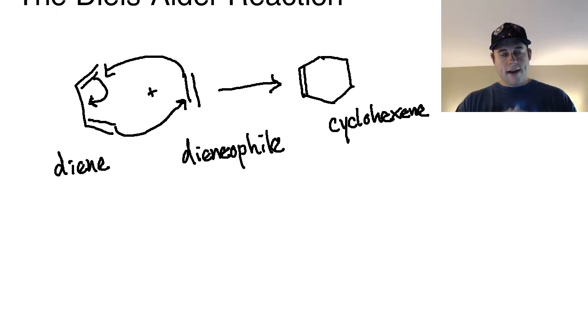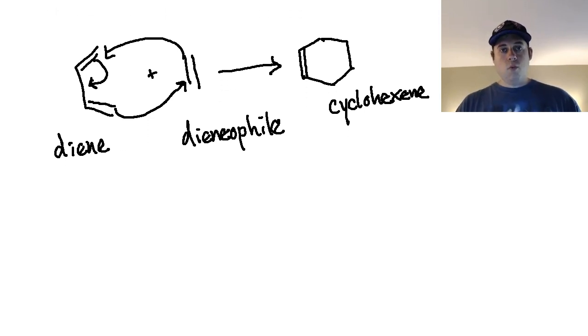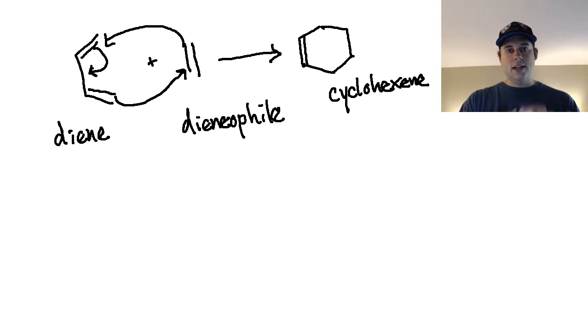Once we have a general understanding of the mechanism, we want to understand the individual reagents because it turns out the way that this is written is a very sluggish or slow reaction. It's not optimized for the best possible results when you're working with a Diels-Alder reaction. Let's talk about the specifics required for each thing.